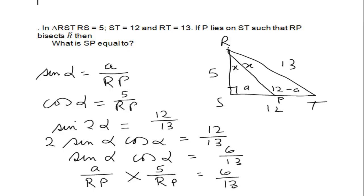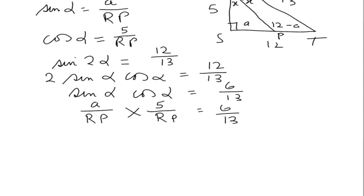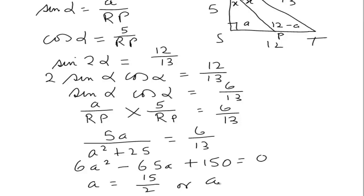I can substitute sin α as a over RP times 5 over RP equals 6 over 13. From this I've got RP². Now RP² equals a² plus 25. So I've got 5a over RP² where RP² is a² plus 25. Cross multiplying we get 6a² minus 65a plus 150 equals 0. Then a equals 15/2 or a equals 10/3.